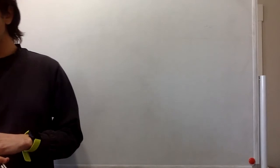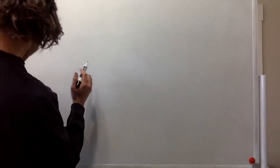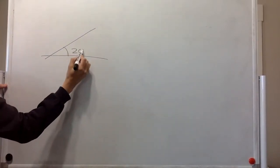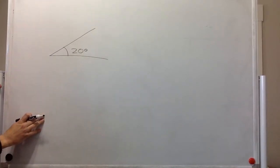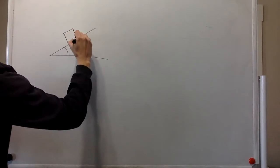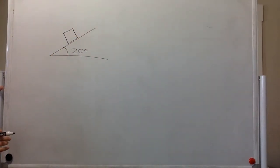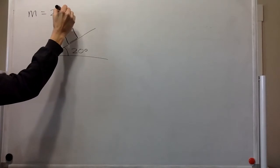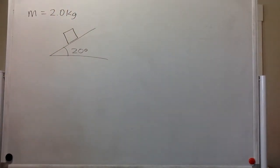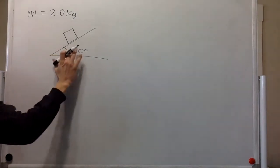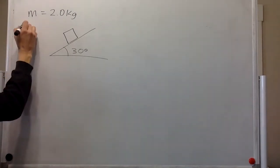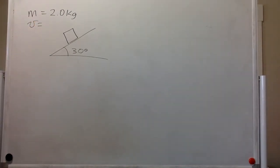In this problem we have an incline of 30 degrees and a wood block with a mass of 2.0 kilograms. The wood block is launched up the incline at 30 degrees, and the block's initial speed is 10 meters per second.